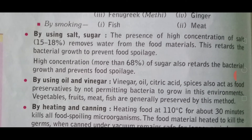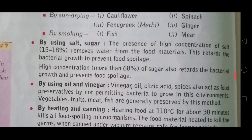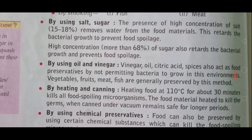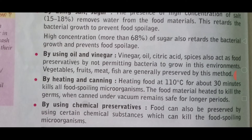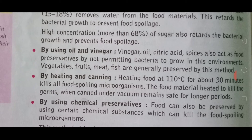By adding a high concentration of salt, the speed of bacterial growth inside the food is considerably slowed down. More than 68% concentration of sugar also retards bacterial growth and prevents food spoilage. Similarly, adding a very large amount of sugar to any food also prevents and slows down bacterial growth.